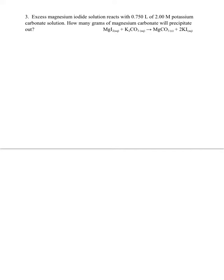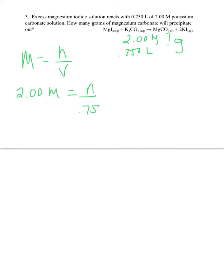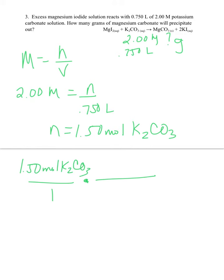In number three, we're going to do the same stoichiometry process, but this time we have information in molarity. We have a two-molar solution of potassium carbonate and we have 0.750 liters of it. We would like to find how many grams of magnesium carbonate will be produced. So let's use our molarity equation: molarity equals moles of solute over the volume of the solution in liters. If we plug in what we know, we can solve for the moles of solute — and moles is what we need to do our stoichiometry. Now that we know how many moles of solute we have, we can start our factor label problem. We have 1.50 moles of potassium carbonate.